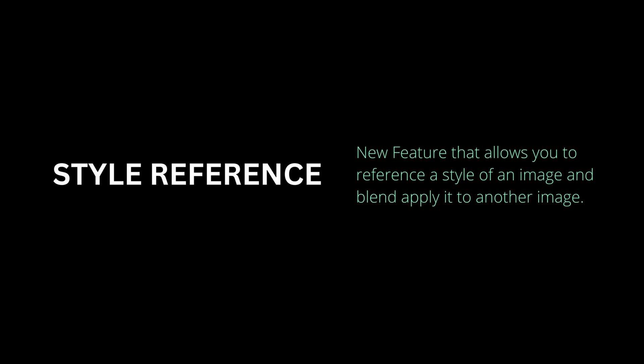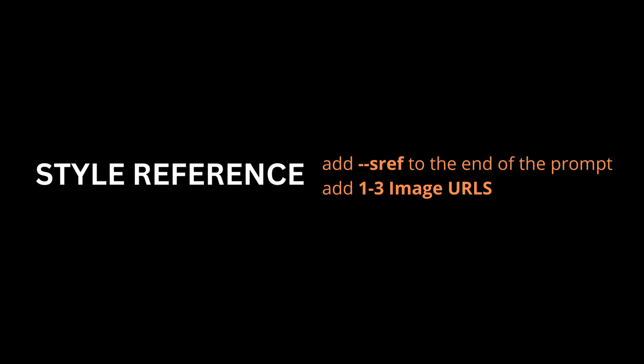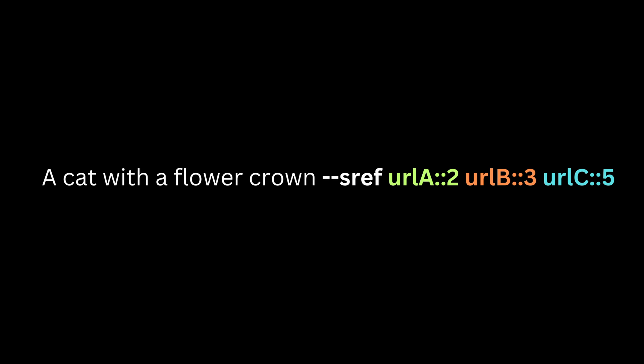One of the features I'm really excited to share is Midjourney v6's style referencing, which essentially allows you to take a reference style or image and blend that style with another image you've generated or are trying to generate. Say you want to blend a James Bond poster style with the image we just generated. All we do is go to the end of the prompt and add --sref, and we can add one, two, or three different style references.